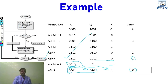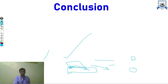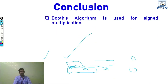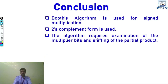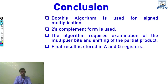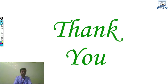In this way we calculate multiplication using Booth's algorithm. In conclusion, it is used efficiently for signed multiplication, two's complement form is used for negative numbers, and multiple-bit shifting of partial products is used. The final result is stored in the A and Q registers.